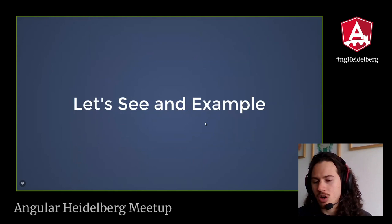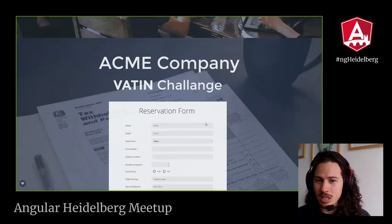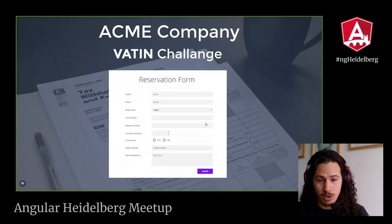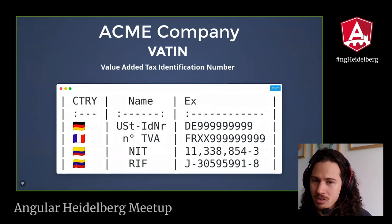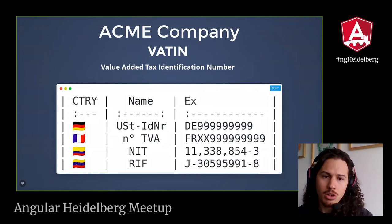Let's see with an example how an organization would be managed using the separate repository approach. Our startup is very simple — it is going to be a webpage with a form, and that form is going to process a VAT number. That number is very complicated to pronounce, so let's call it a business ID or company ID. That number is just a number that identifies your business to the government, and it is unique in your country.